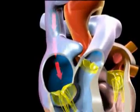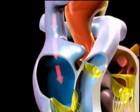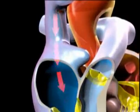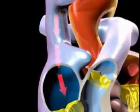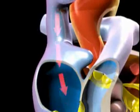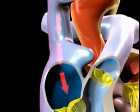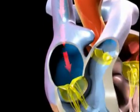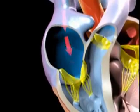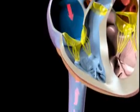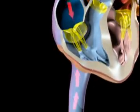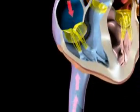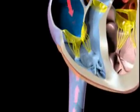Blood returning from the upper part of the body is delivered to the right atrium of the heart by the superior vena cava, one of the body's two largest veins, while blood returning from the lower part of the body is delivered to the right atrium by the other major vein, the inferior vena cava.